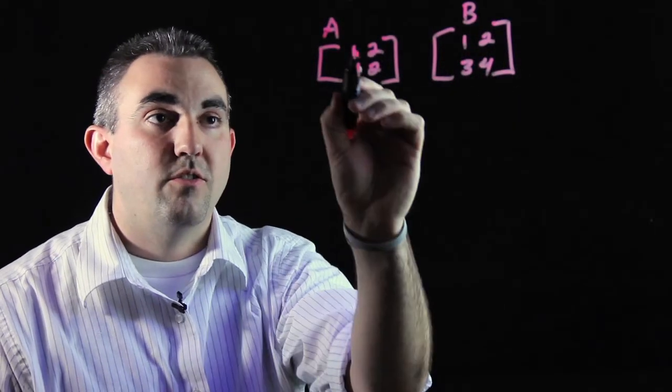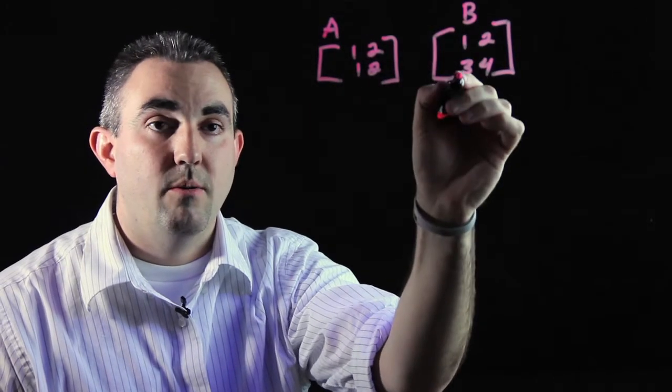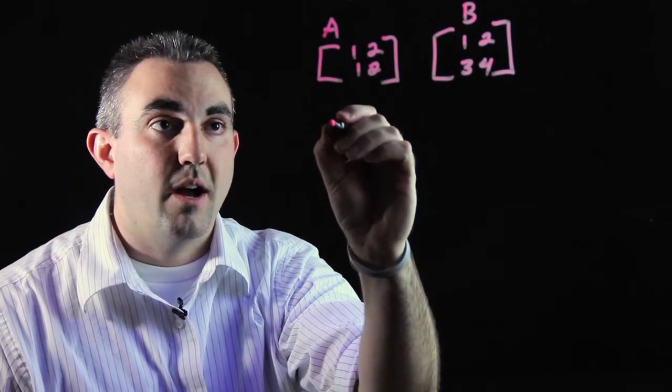The thing to remember is you're multiplying rows times columns. So it's row 1 times column 1, row 1 times column 2. That'll give you your first two numbers for your answer box.